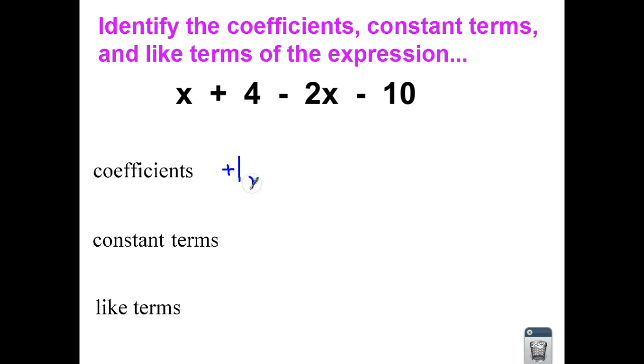Now, do I have any other coefficients down the line? Looking for variables, I see an x, and the number that is stuck to the x is this negative 2. Don't forget about the negative sign. So you take the sign in front. This is a negative 2 coefficient.